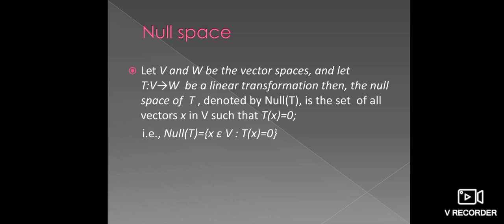Now, see the null space. Let V and W be vector spaces. Define the mapping T from V to W as a Linear Transformation. Then the null space of T, denoted by N(T), is the set of all vectors X belonging to V such that T of X equals 0. That is, the null space of T equals the set of X in V such that under the Linear Transformation T we get 0 only.